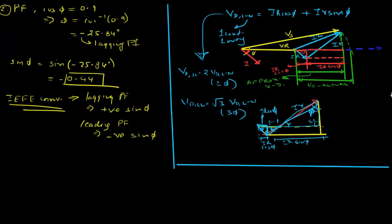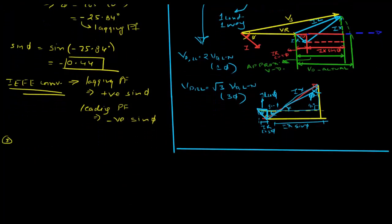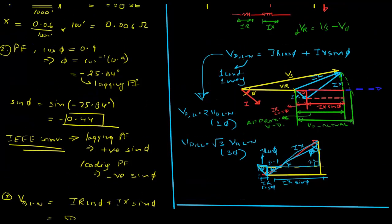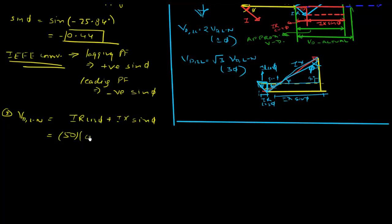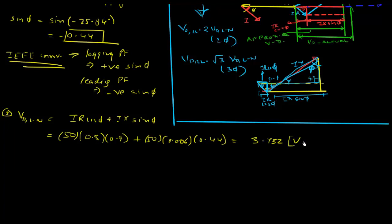Step 3: Calculate voltage drop line-to-neutral: V_D(L-N) = I·R·cos(phi) + I·X·sin(phi) = 50 × 0.08 × 0.9 + 50 × 0.006 × 0.44 = 3.732 volts.